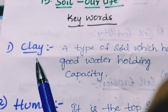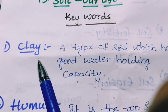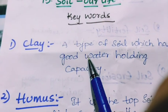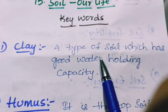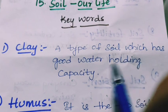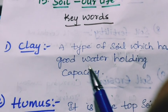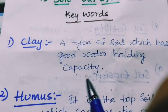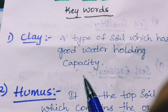Look at the first keyword: Clay. Clay is a type of soil which has good water holding capacity.